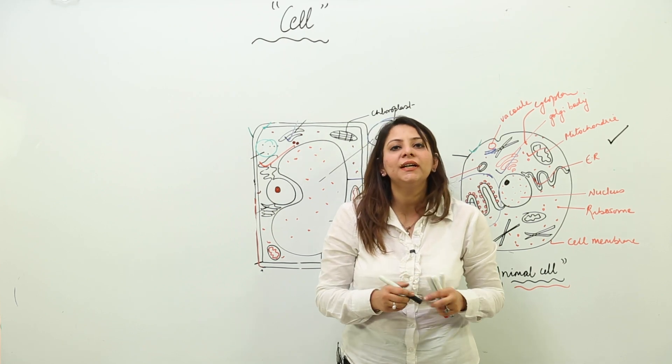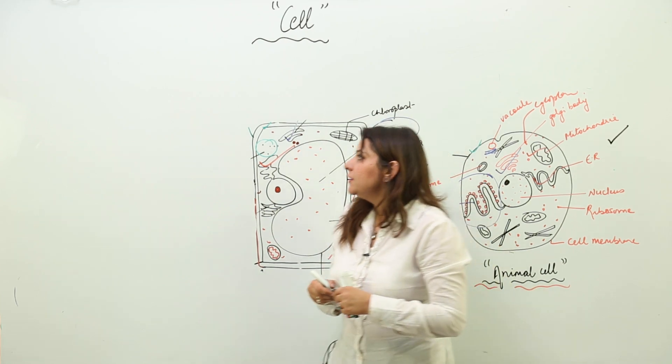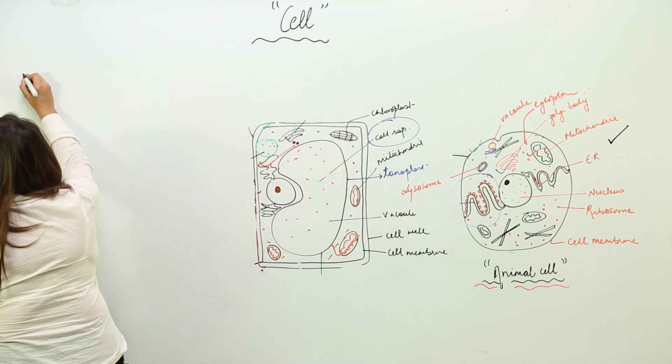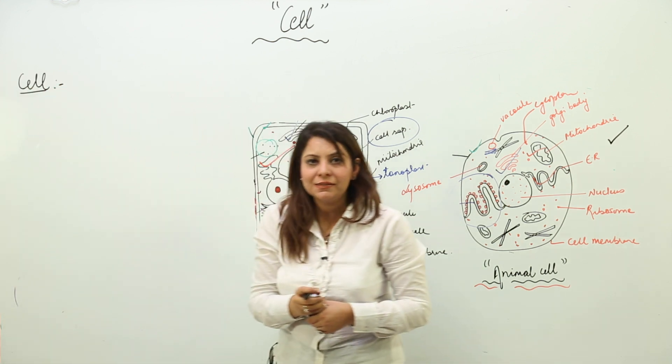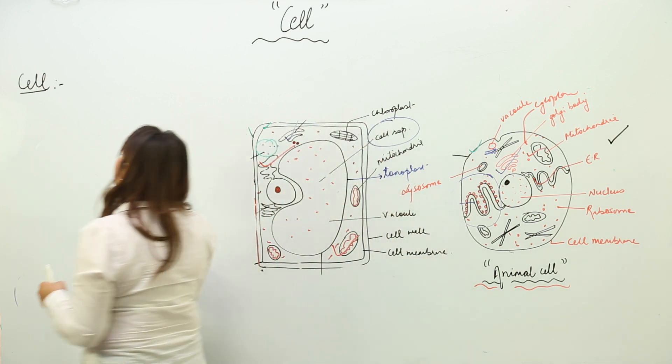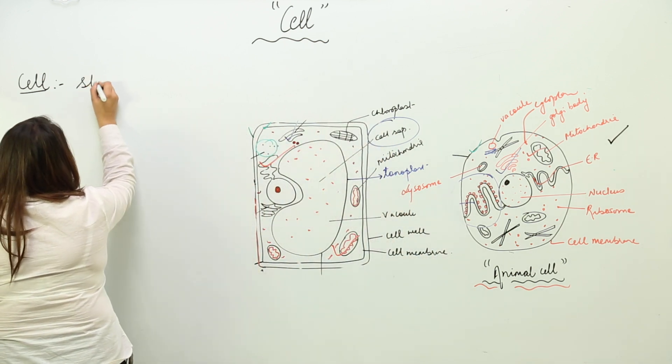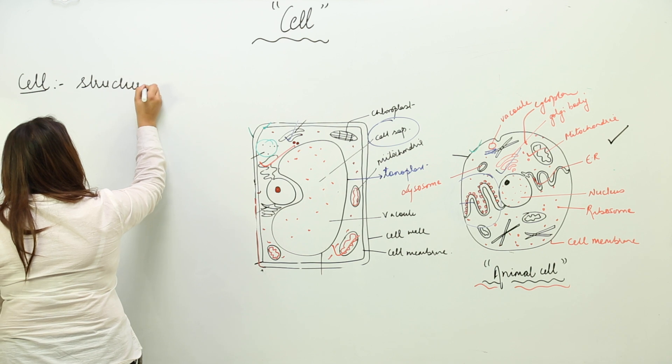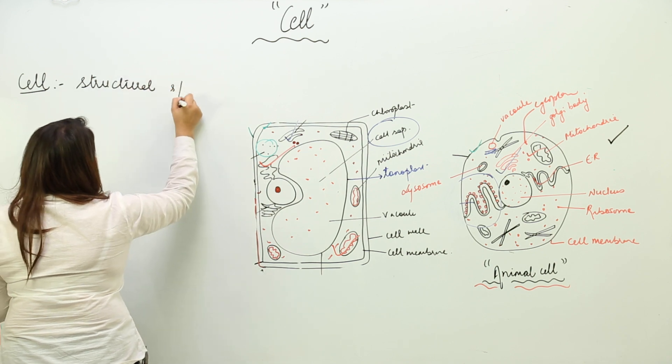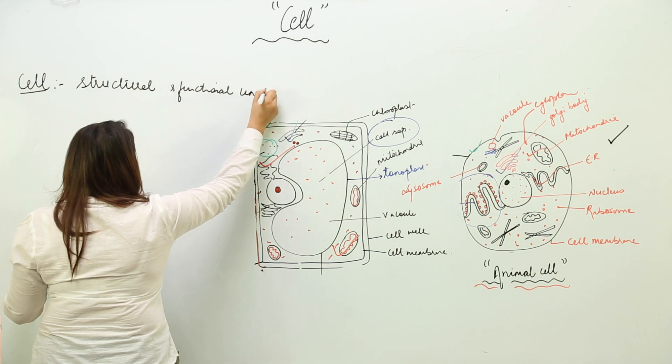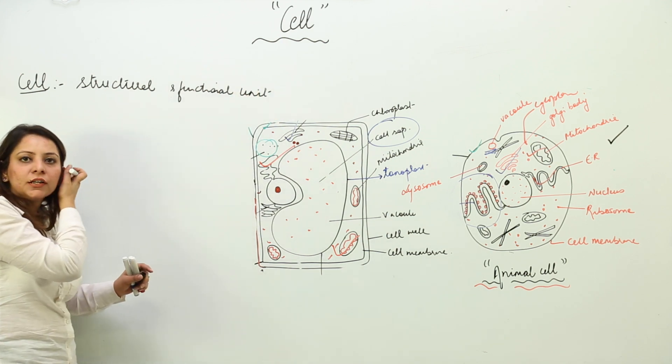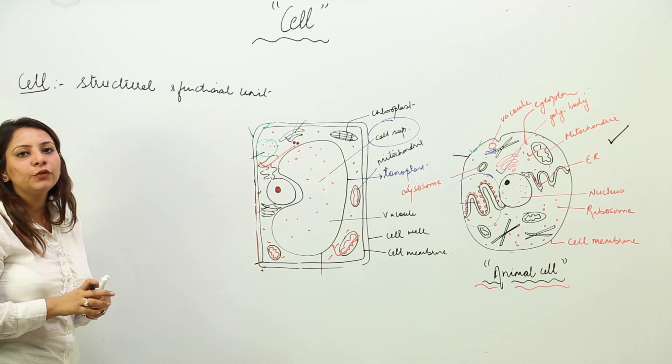Now we are going to start with a unit that is the cell. We all know that the smallest unit which is present in a body is the cell. So we call it as cell as a structural and functional unit.